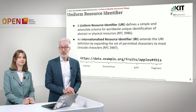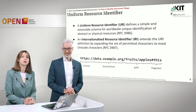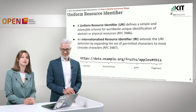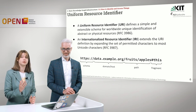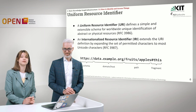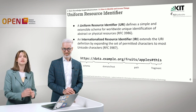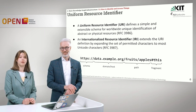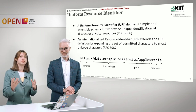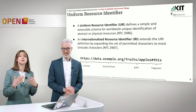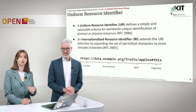So how do we do this on the web? To distinguish one apple from another apple on the web and also from any other resource, we need a Uniform Resource Identifier. A URI defines a simple and extensible schema for worldwide unique identification of abstract or physical resources. Think of it as street numbers — similar to how a street identifies a specific location, a URI identifies a specific resource on the web.